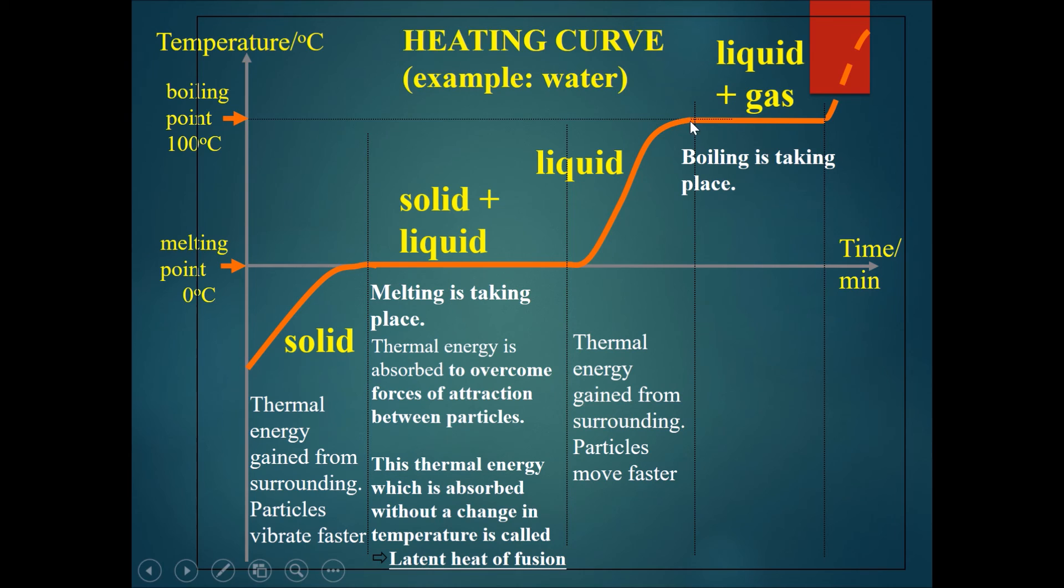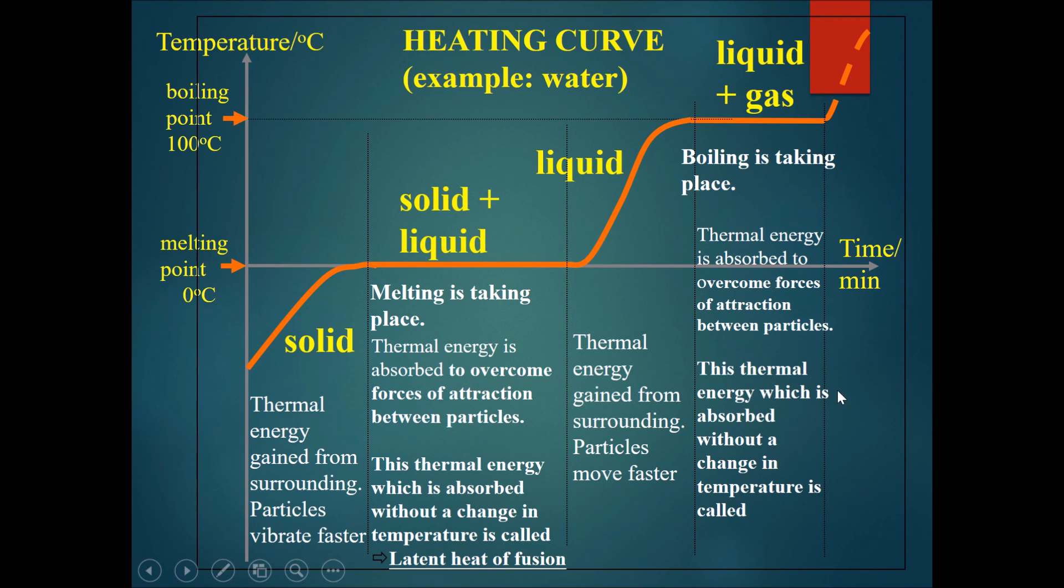So over here it will be completely liquid at 100 degrees celsius. In the middle it will be a mixture of liquid and gas both at 100 degrees celsius. And at this point over here it will be only gas at 100 degrees celsius. Thermal energy is absorbed to overcome the forces of attraction between the particles. Once again this thermal energy which is absorbed without a change in temperature is called the latent heat of vaporization.